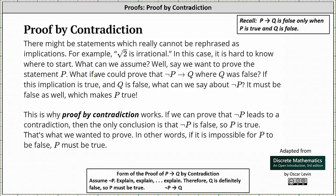In this case, it is hard to know where to start. What can we assume? Well, say we want to prove the statement P. What if we could prove that if not P, then Q, where Q was false? If this implication is true and Q is false, what can we say about not P? It must be false as well, which makes P true.